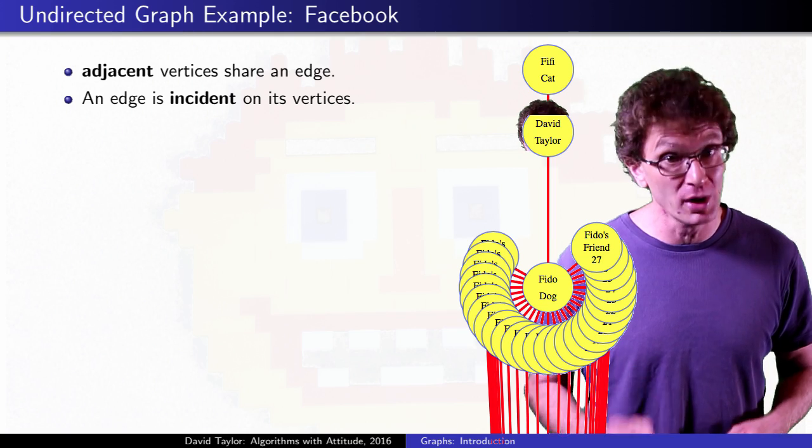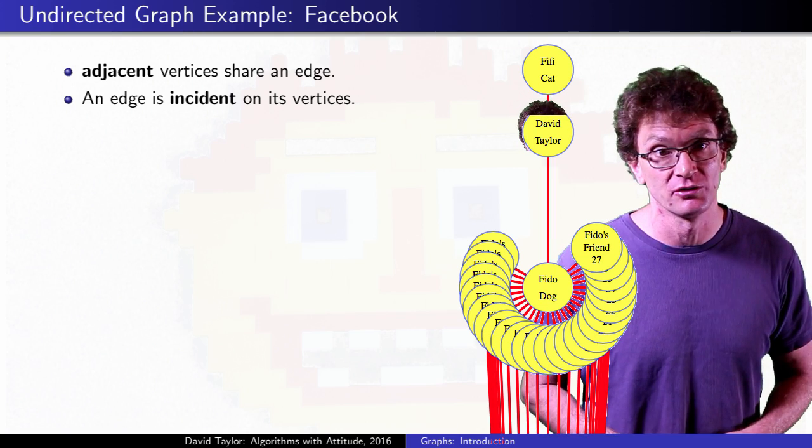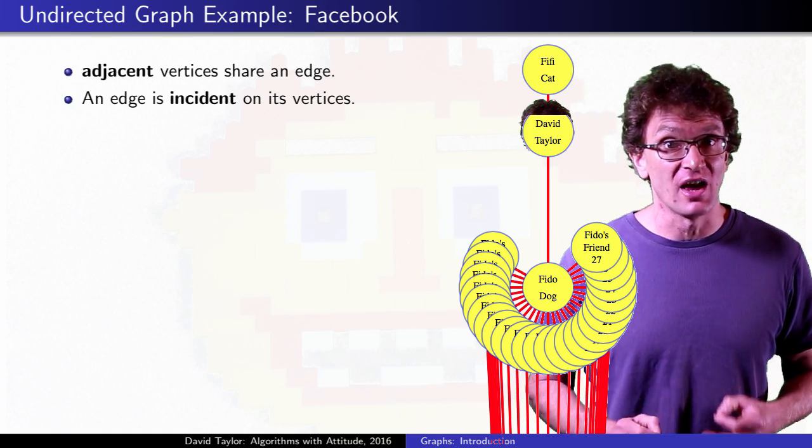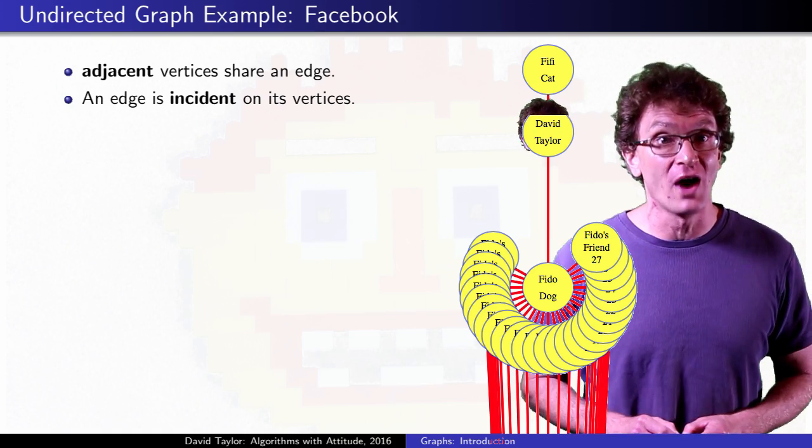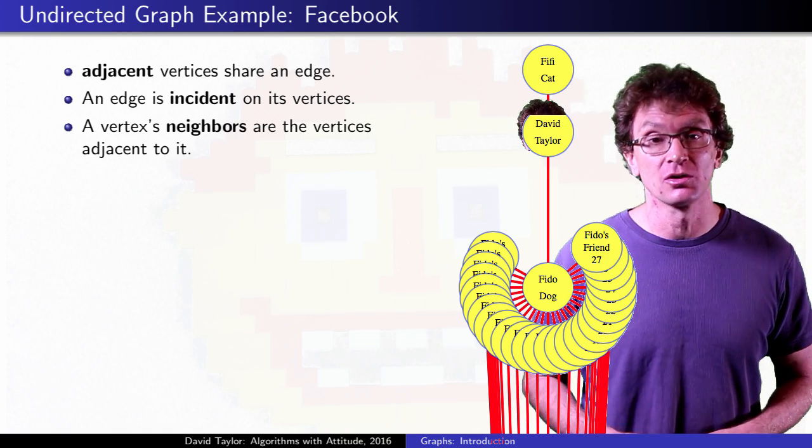Just for scale, Facebook's a pretty big graph with over a billion vertices and hundreds of billions of edges. So what does it mean if you have your privacy settings set so that only your friends can see your posts.